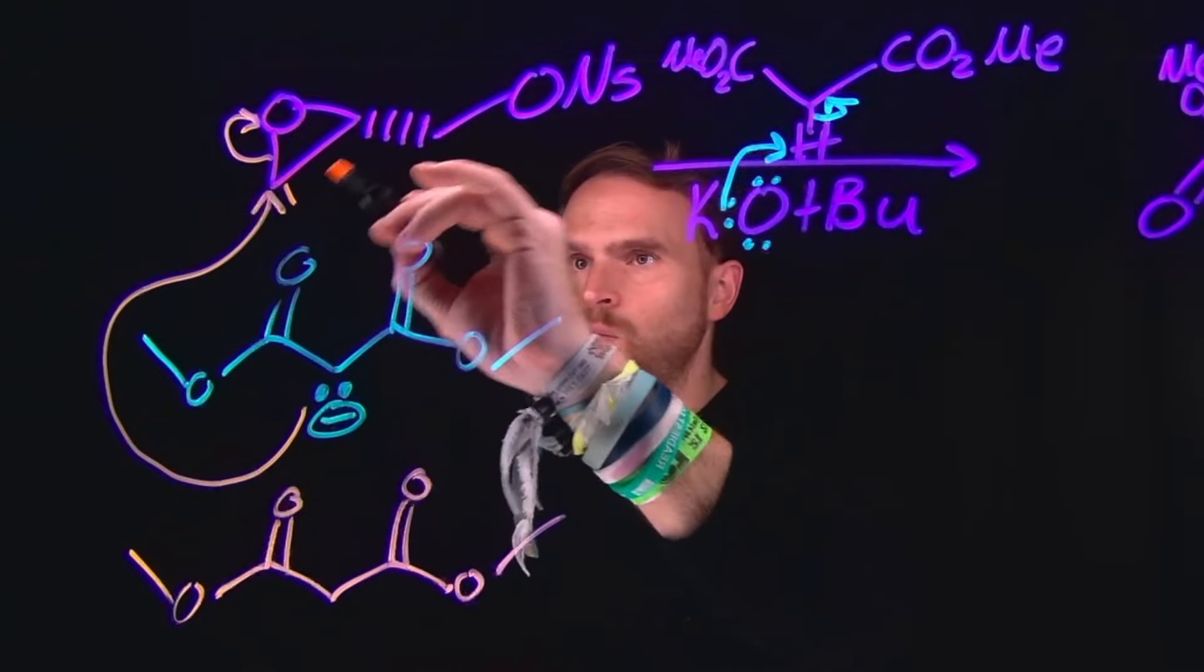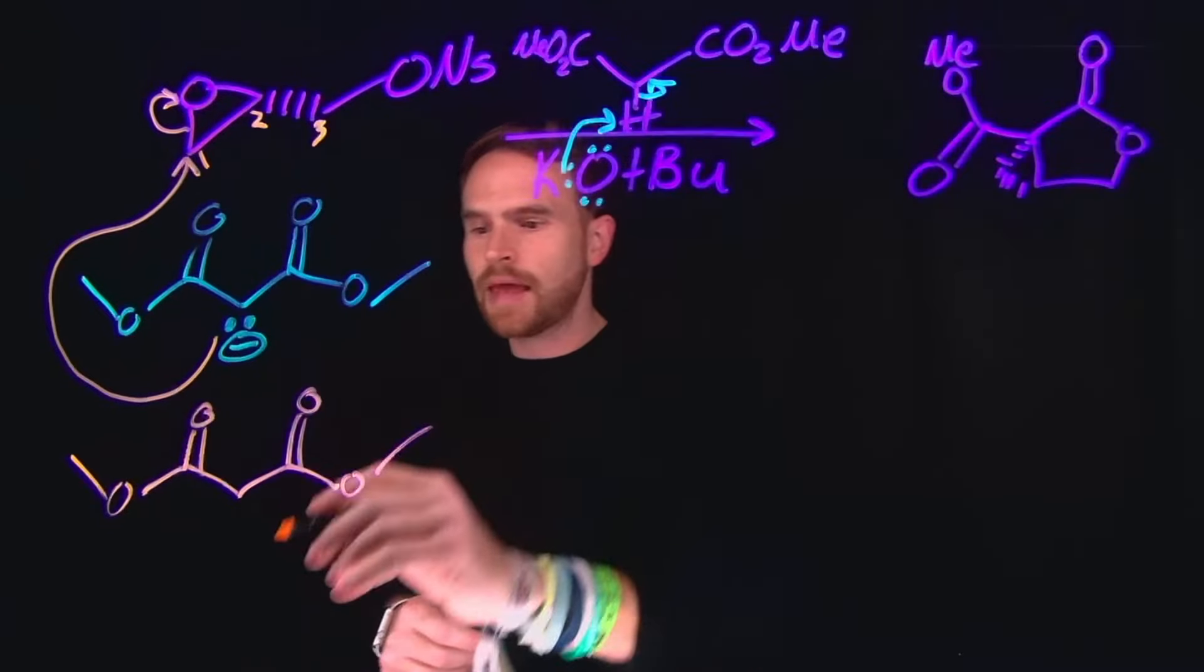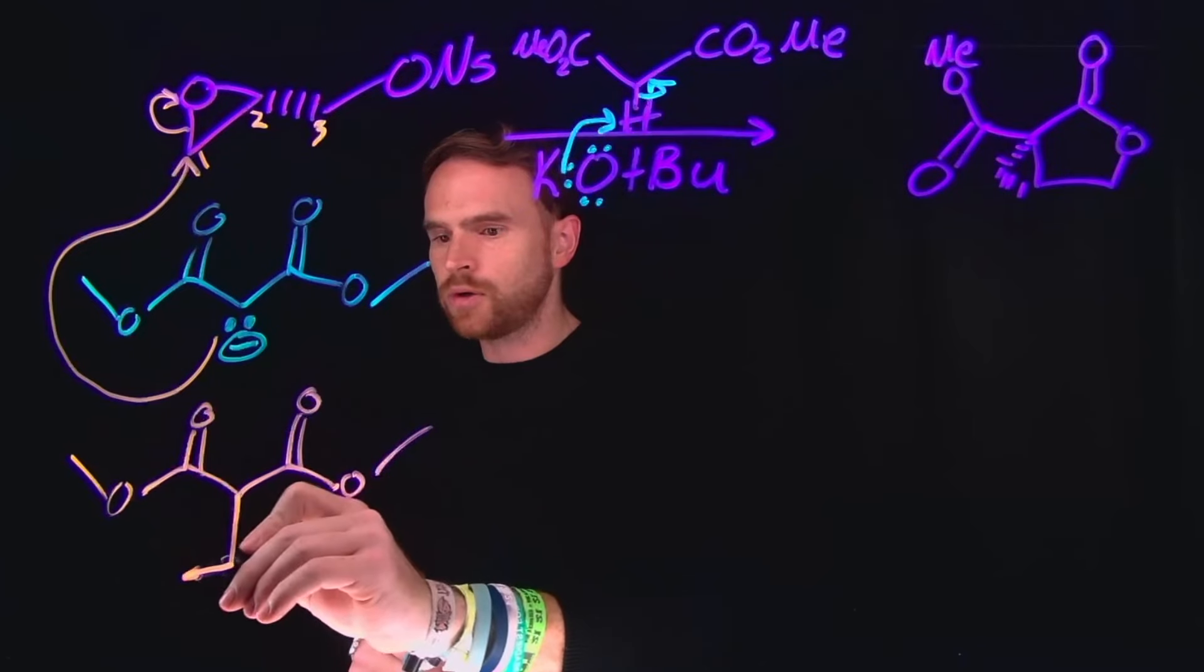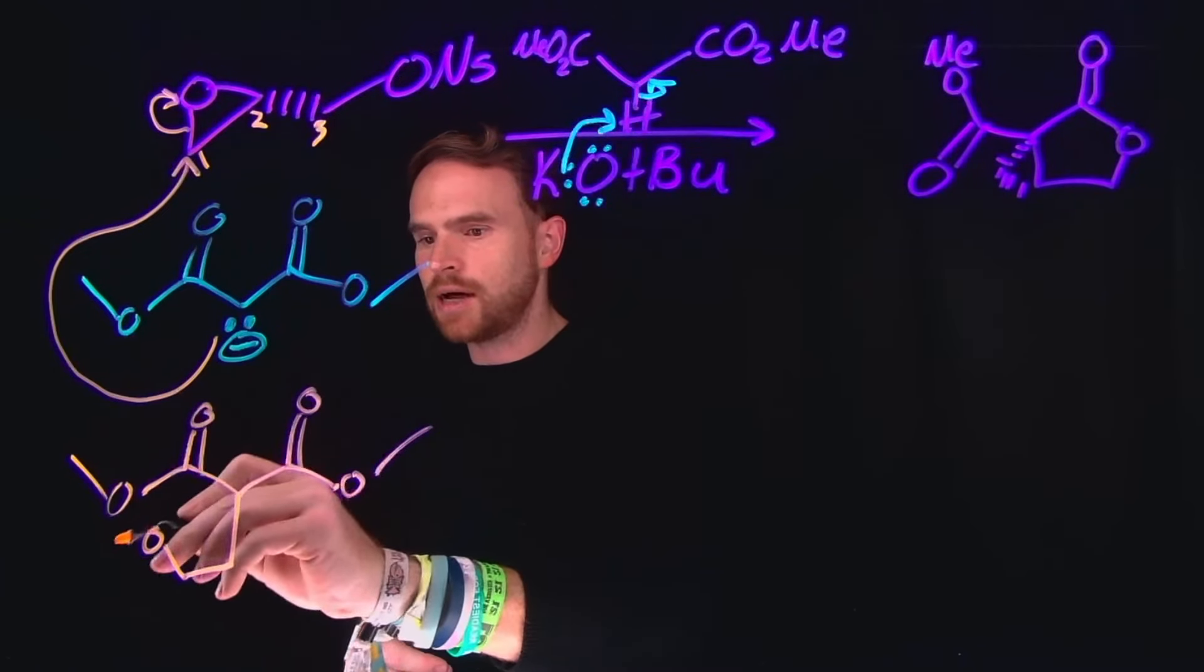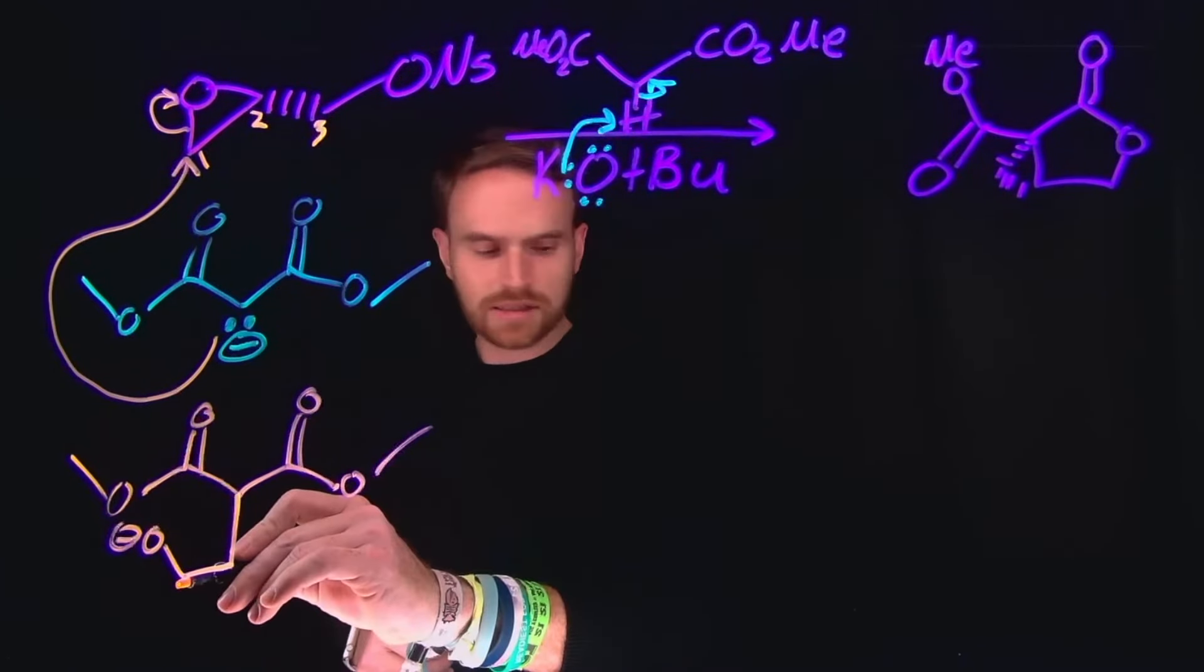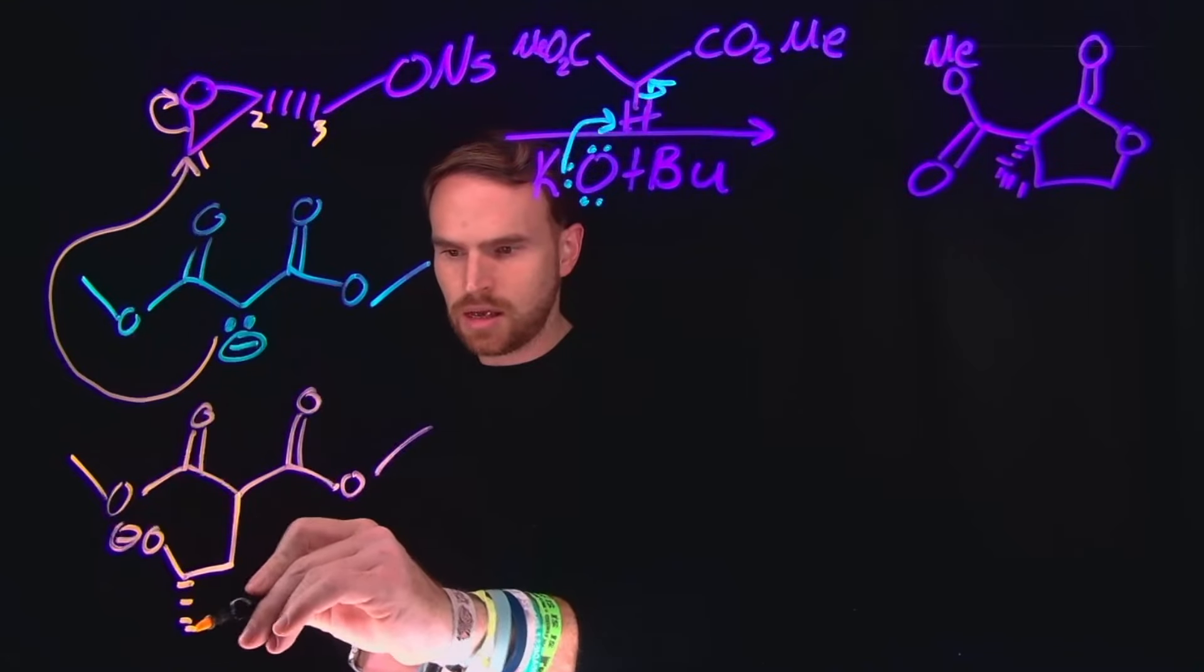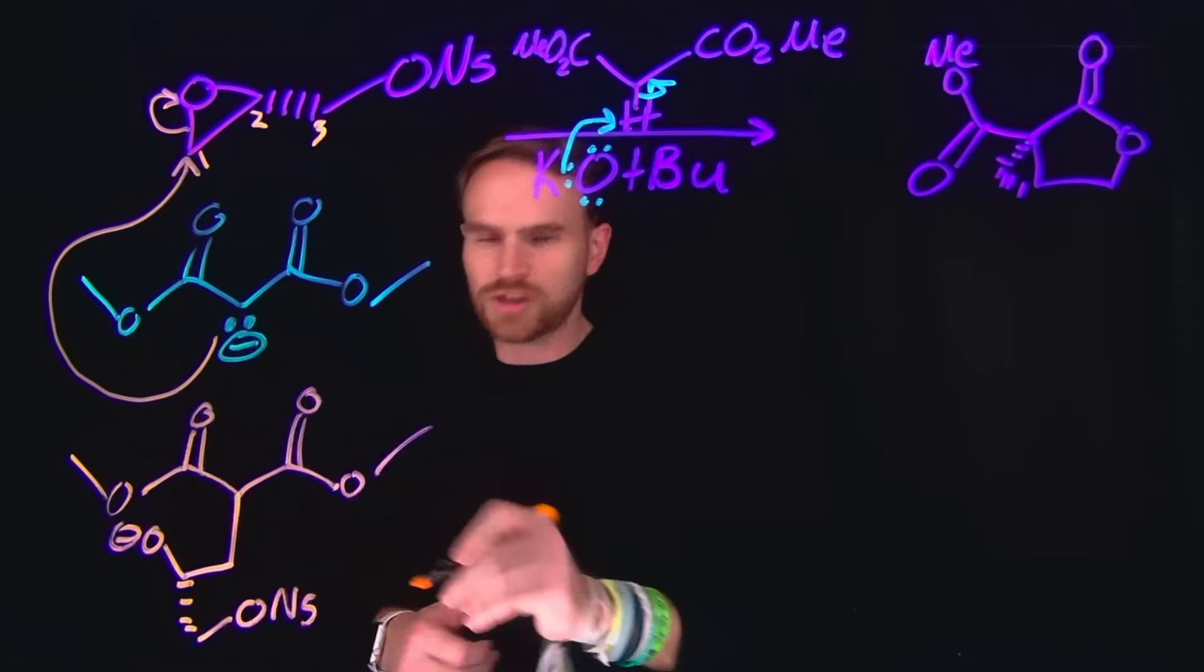That chain contains one, two, three carbons. At the two position, we place that alkoxide which has now been formed. The rest of the molecule still has this ONS group on it, which is a good leaving group.